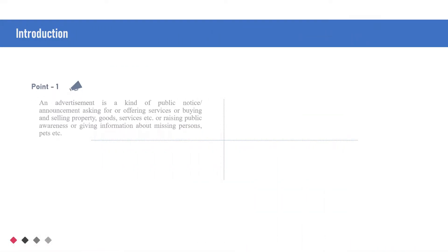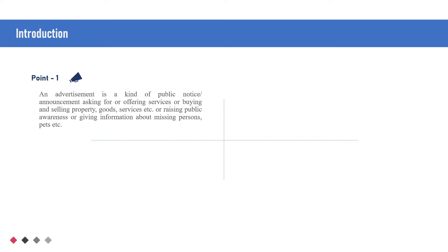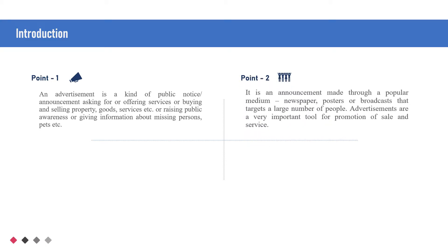Introduction: An advertisement is a kind of public notice or announcement asking for or offering services, or buying and selling property, goods, services, etc., or raising public awareness or giving information about missing persons, pets, etc. It is an announcement made through a popular medium — newspaper, posters or broadcasts — that targets a large number of people.